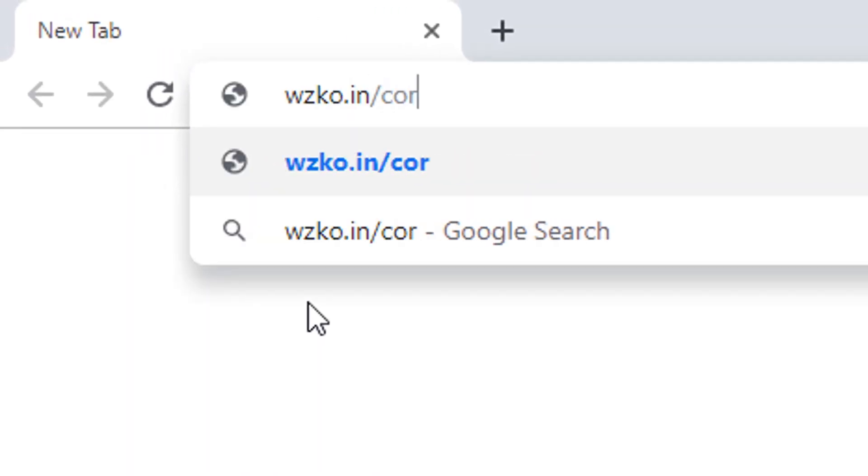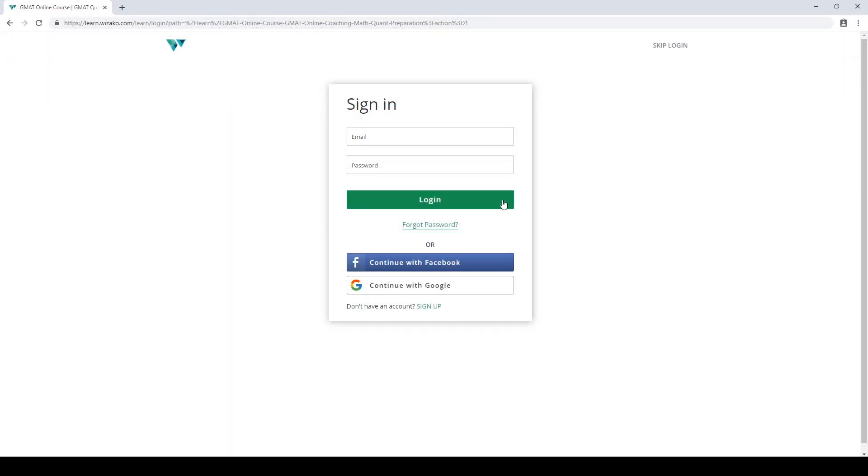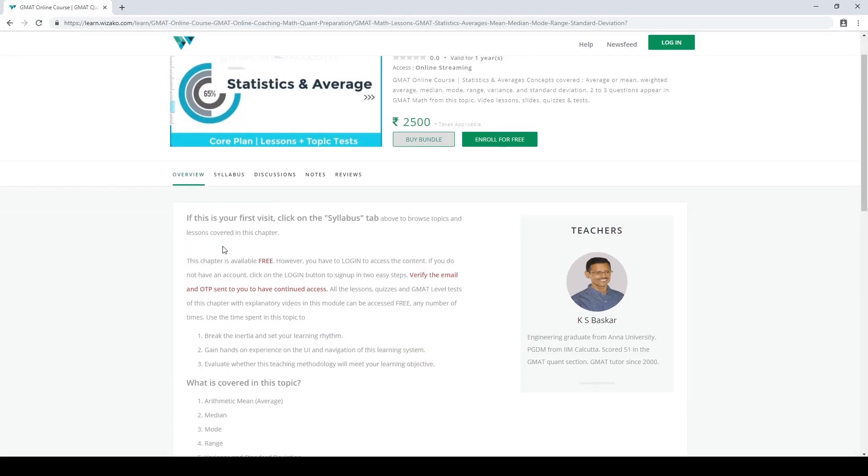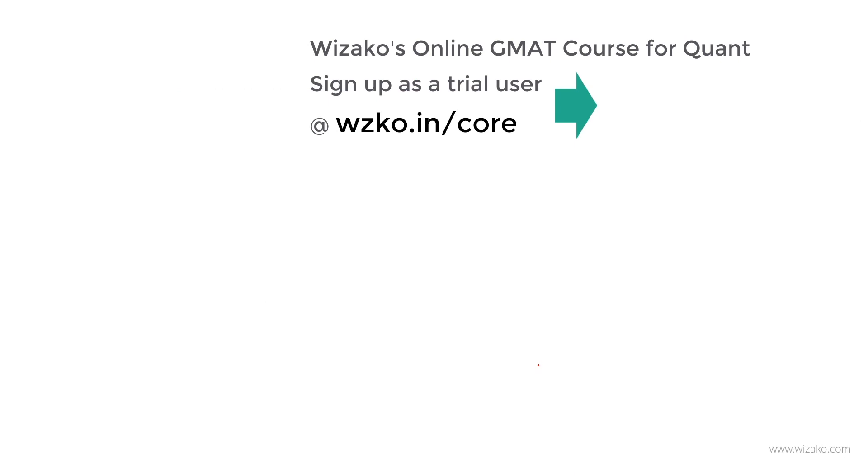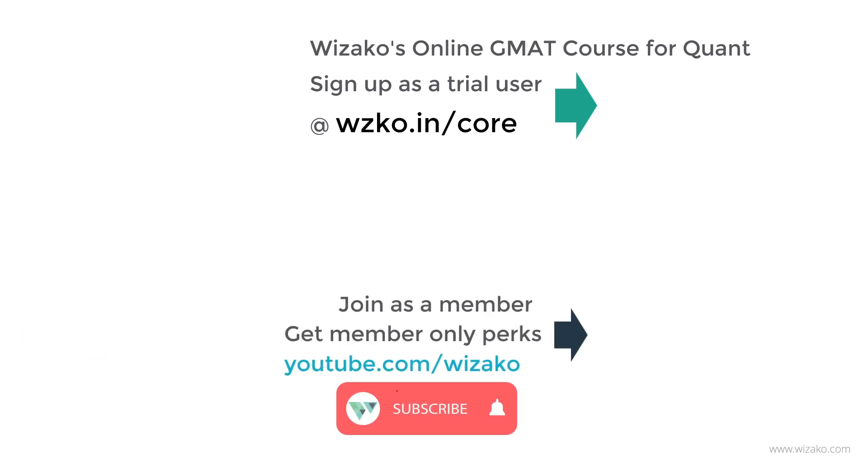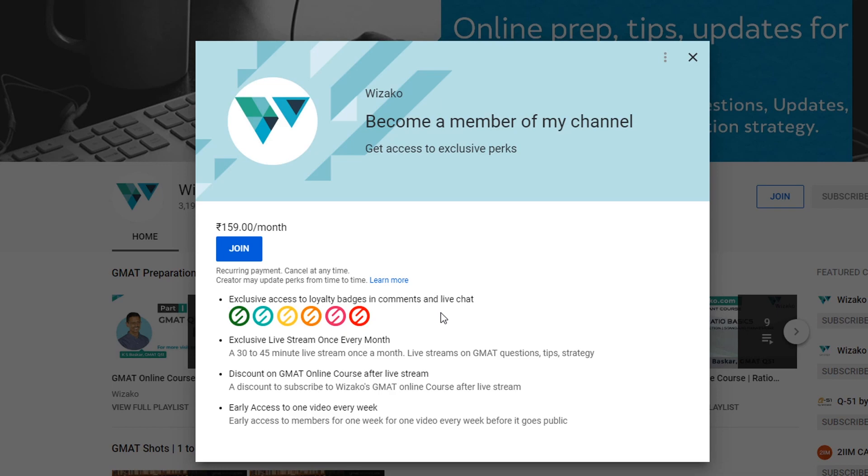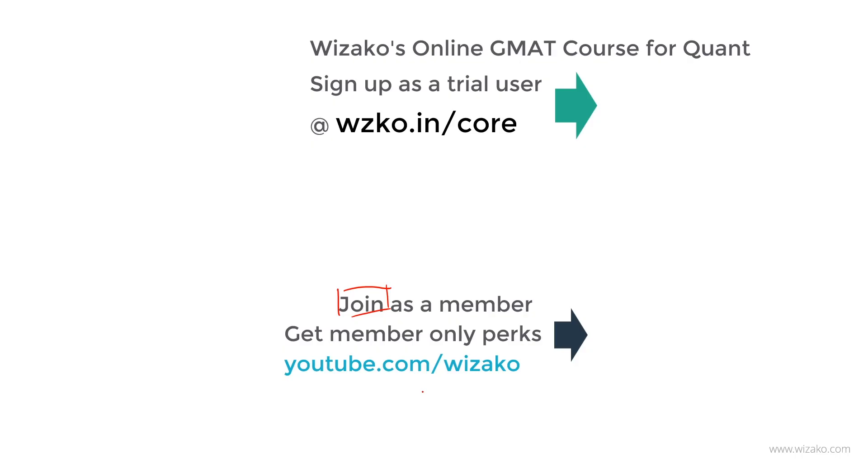Before you leave, three things. One, sign up as a trial user at wzko.in/core. Get started with statistics on average. It's a free topic. Build momentum into your GMAT preparation with this topic and then convert it into a paid user and unlock the remaining topics. Two other things. One, subscribe to this channel youtube.com/wizaco. The third thing, not only can you subscribe to the channel, you can also do one more thing. You can join as a member of this channel. If you join as a member, you'll be able to get member-only perks which are not available to free users. These member-only perks will help give you a boost to your GMAT preparation. Click on the join button. You'll have a listing of the member-only perks and that would help you crack the GMAT. Best wishes.